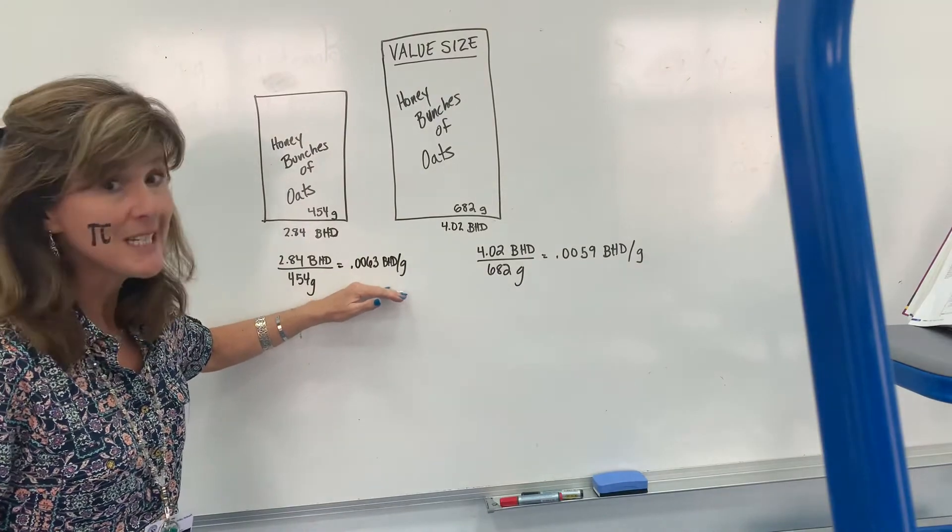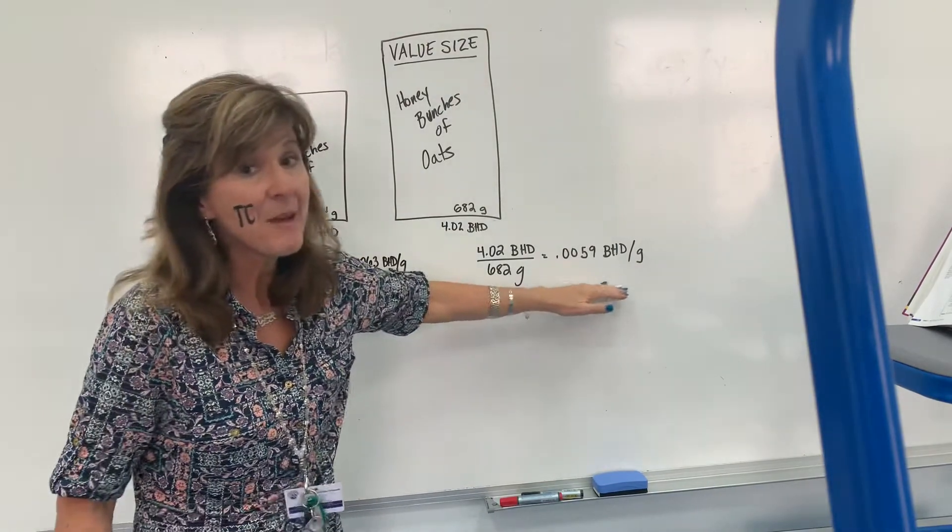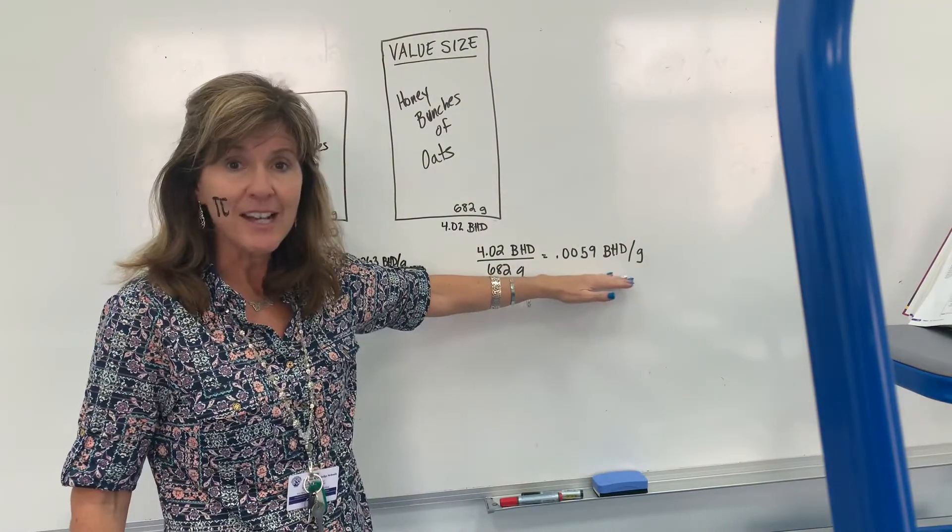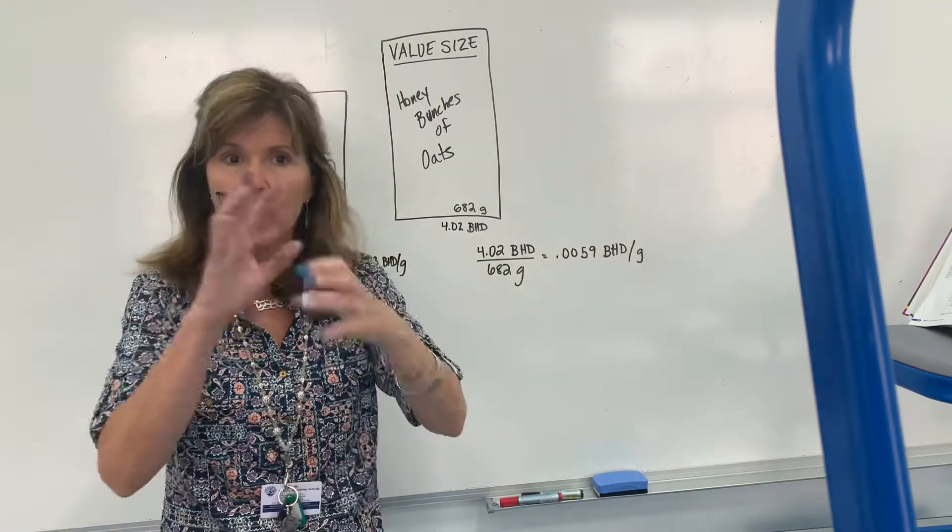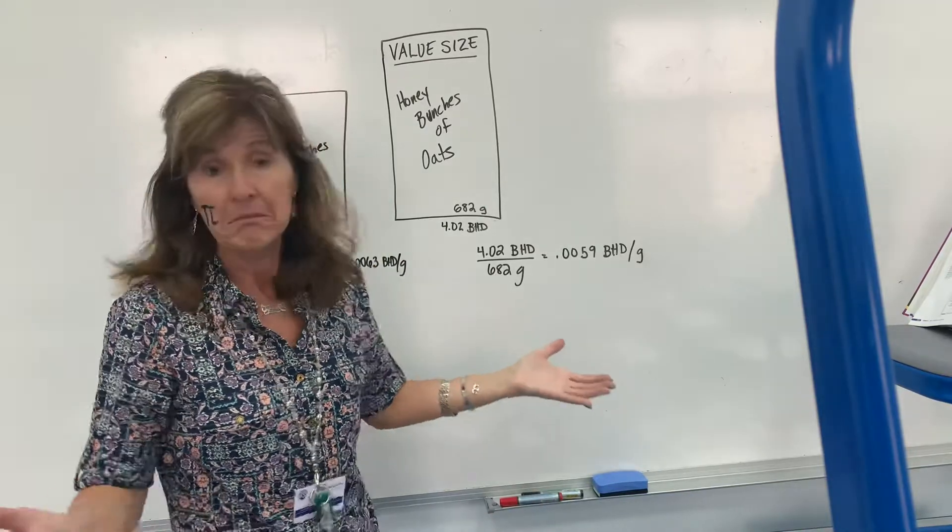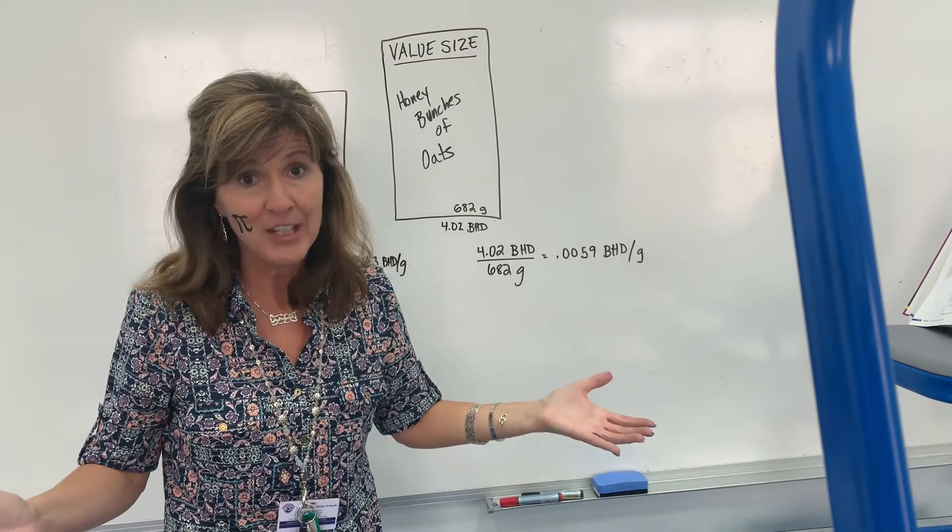So here I'm paying 0.0059 BDs and here I'm paying 0.0063 BDs. Which is the better deal? Well, clearly this is the value size. So because I was able to quickly figure out my unit rate, I saved a little bit of money. Always a good idea, right?